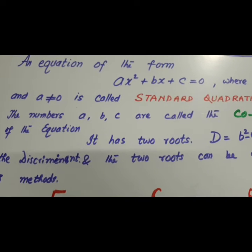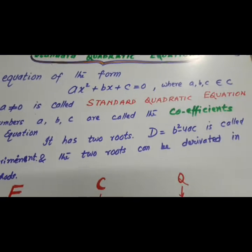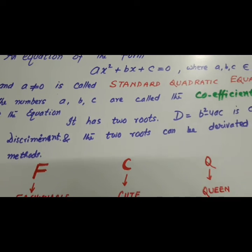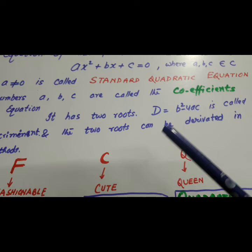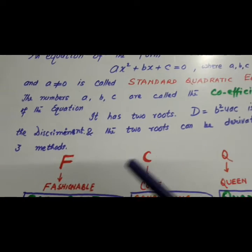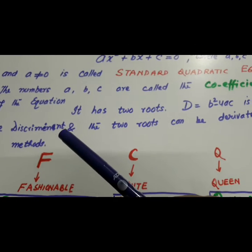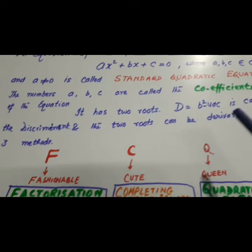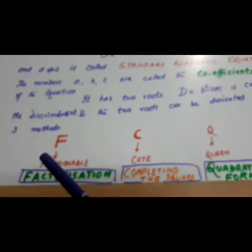Where A, B, C, R are called the coefficients of the equation. It has two roots. And D equal to B square minus 4AC is called the discriminant. And the two roots can be derived by three methods.